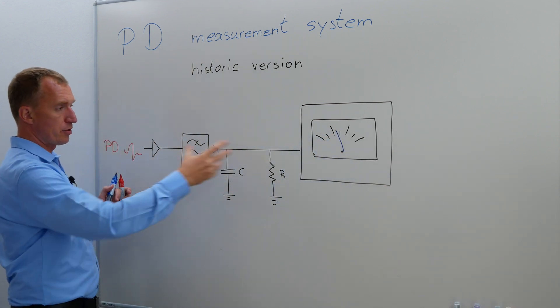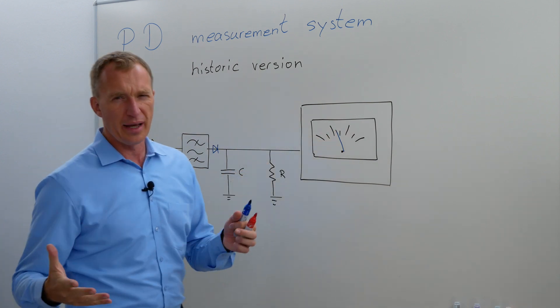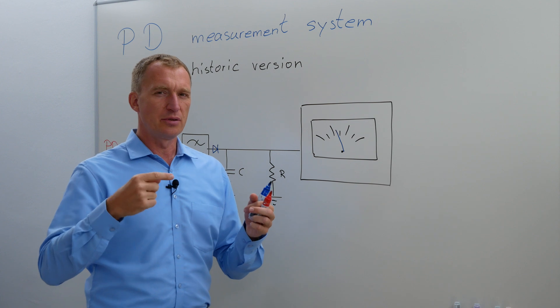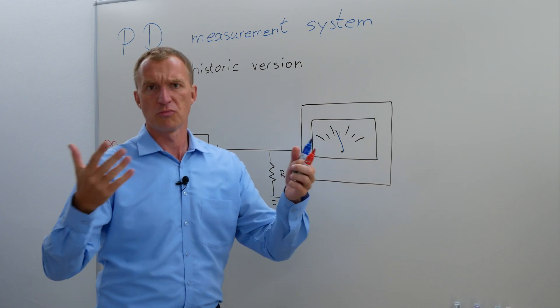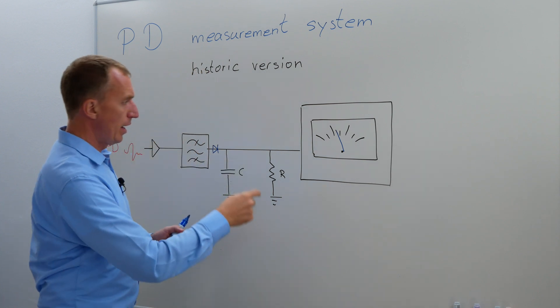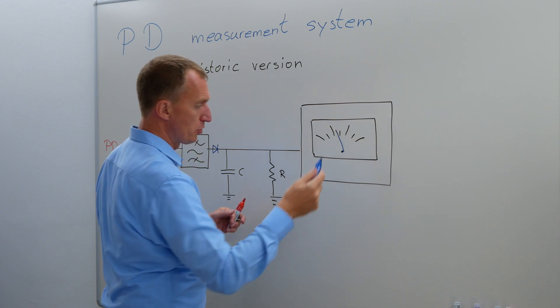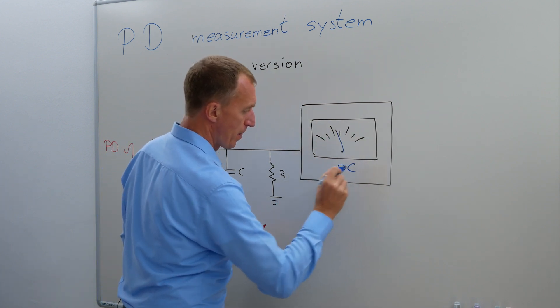So you had a partial discharge coming in, the meter would go up and it would go down. Well actually the idea was that you need multiple partial discharges, let's say around 100 picocoulomb, and they would constantly come in and they would move the needle to here or move the needle to some other place. So this was PC.